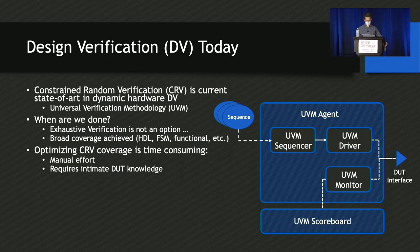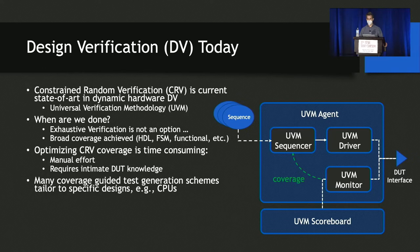Unfortunately, optimizing coverage is somewhat time-consuming. It often requires manual intervention on behalf of hardware engineers and requires intimate knowledge of the DUT, something that can be challenging when verifying the integration of several IP blocks. To overcome this, researchers have proposed using coverage information to inform test vector generation, similar to coverage-guided fuzzing techniques in the software world today. Unfortunately, these techniques are often tailored to specific designs, for example, CPUs. Rather than adapting fuzzing to hardware, we ask: can we fuzz the hardware directly with software fuzzers in a design-agnostic manner?